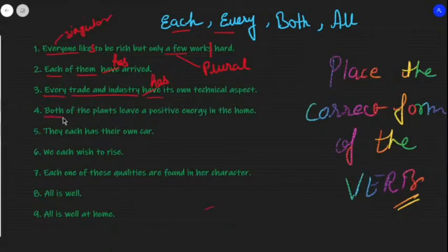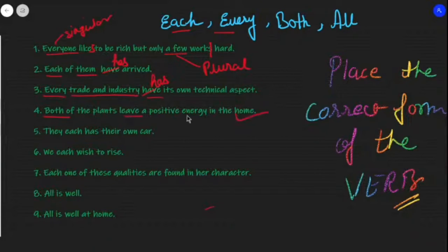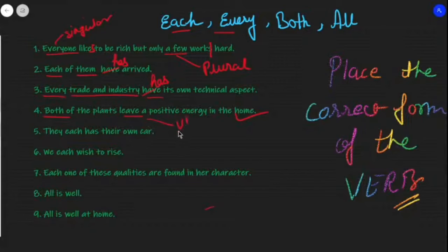'Both of the plants leave a positive energy in the home.' 'Both' indicates plural form — we are talking about two things. So 'both of the plants leave' is the correct sentence. Since the subject is plural, we use the plural verb form 'leave.'